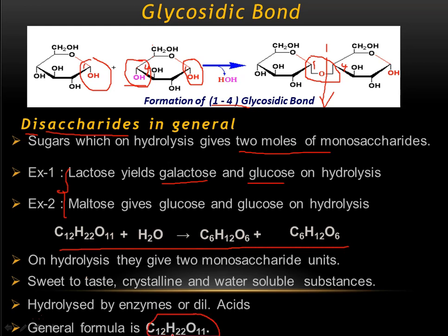The general formula of disaccharides is C12H22O11. Hydrolysis takes place in the presence of water — remember, in glycosidic bond formation a water molecule is removed, so when it is broken down it requires water, giving rise to two monosaccharide units. Disaccharides are sweet to taste, can be crystallized, and are usually water soluble. They are hydrolyzed by enzymes or dilute acids — for example, maltose is hydrolyzed by maltase, and lactose by lactase.